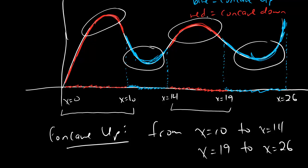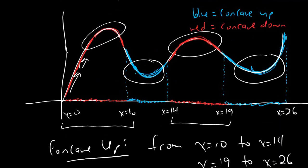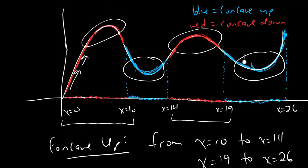You shouldn't confuse concavity with increasing or decreasing. Notice that right here the function is increasing — its y values are getting bigger — but it's still scoopy shaped down, more curved down than curved up. And the same thing here: this function even starts to decrease, but for that first little bit, even while it's decreasing, it's still concave down. So whether it's concave up or concave down is a totally different question from whether it's increasing or decreasing.